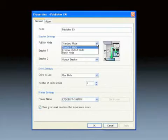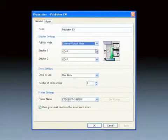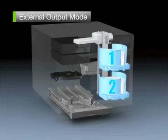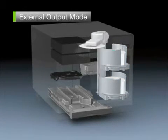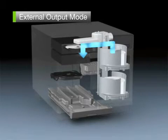For the output of between 1 and 5 disks, set External output mode and place the disks in Stacker 1 or 2. The disks will be transported and data writing will be carried out.